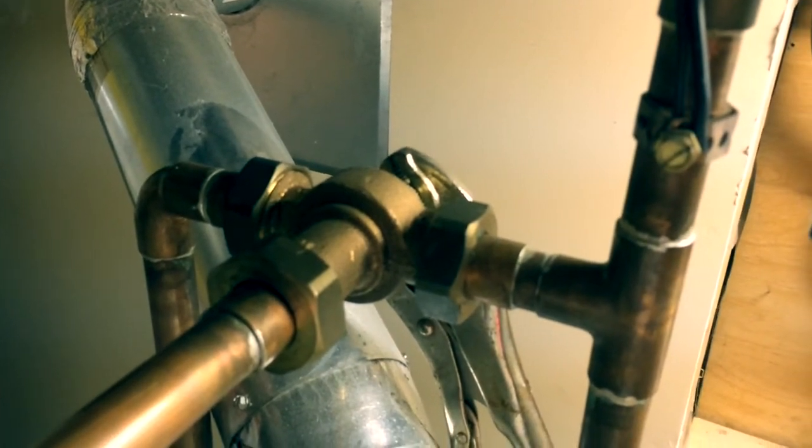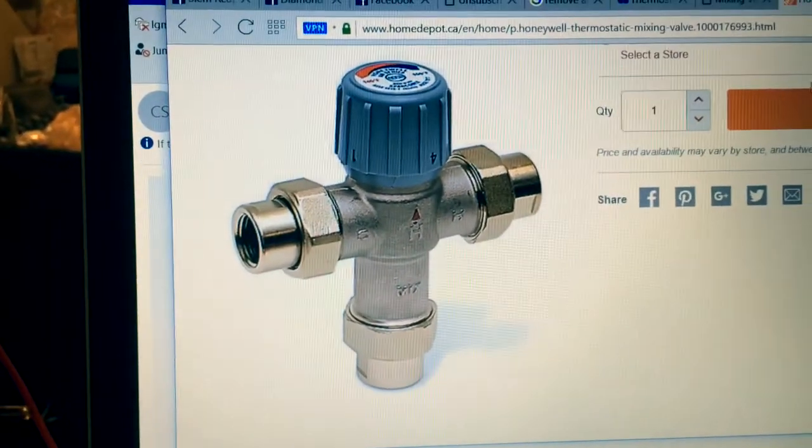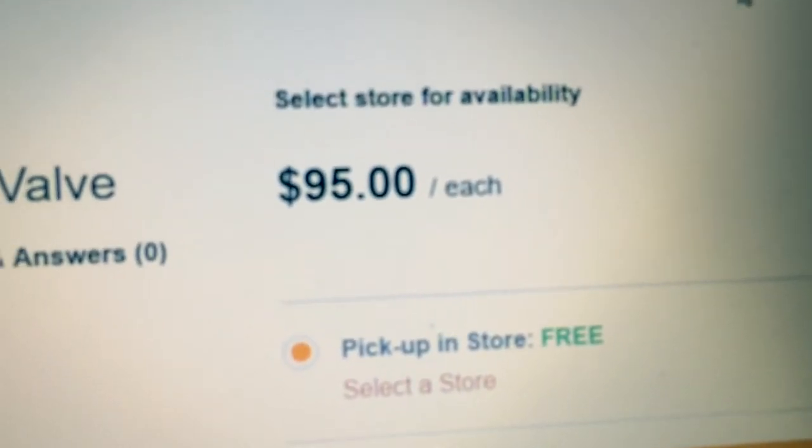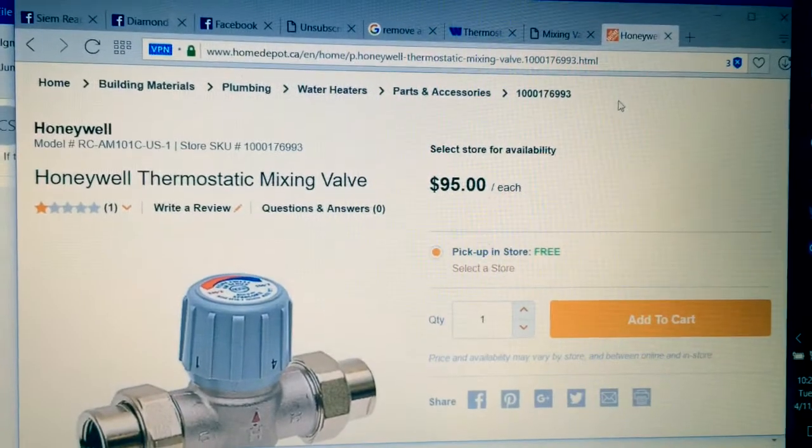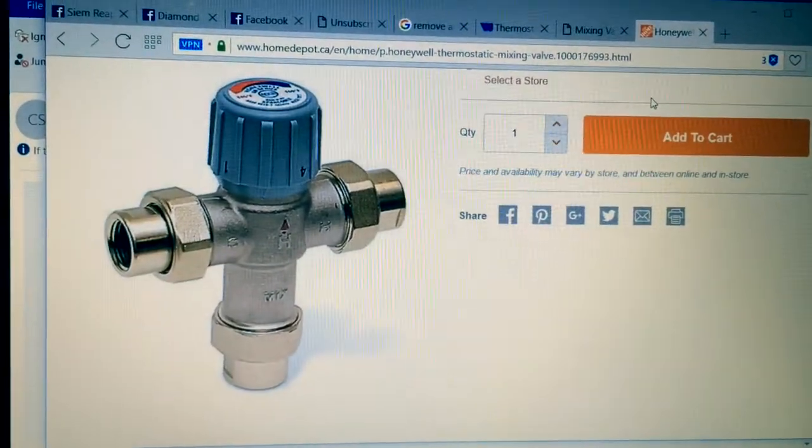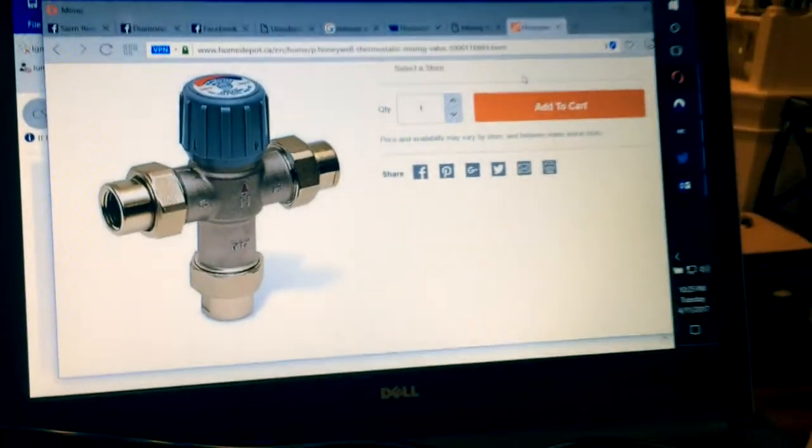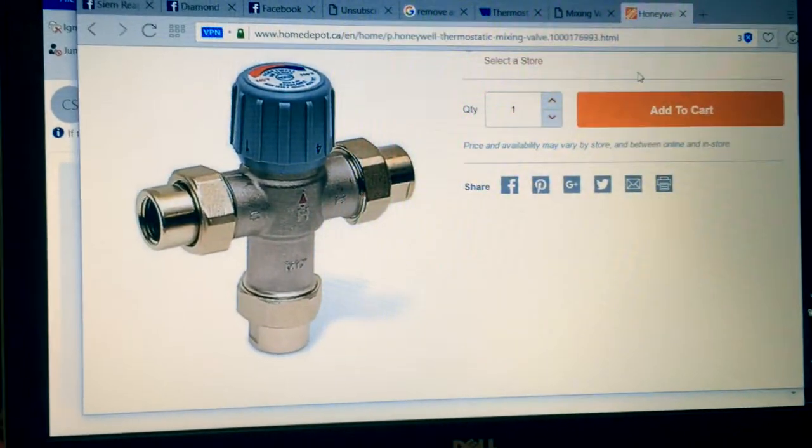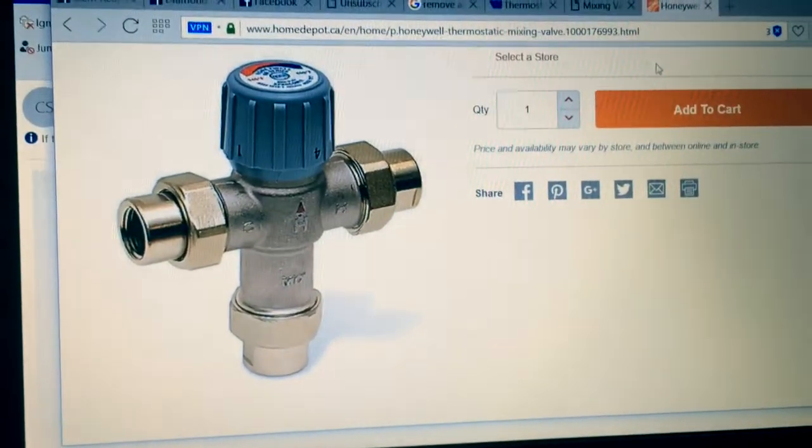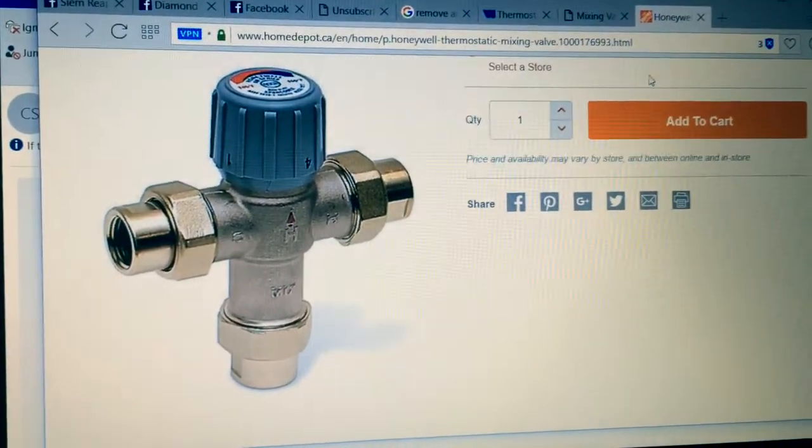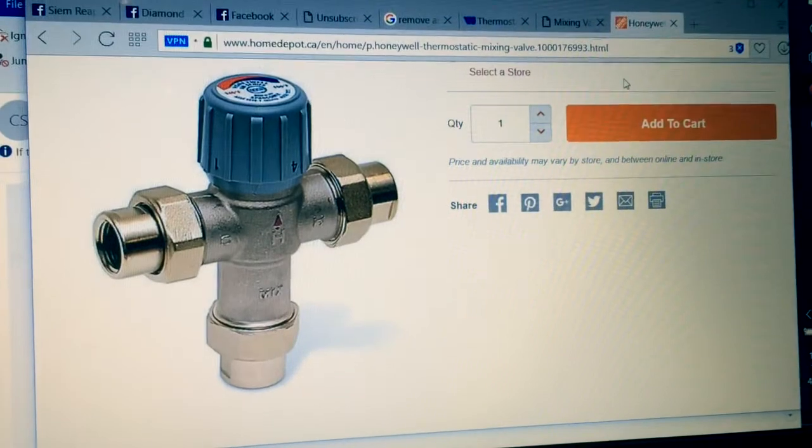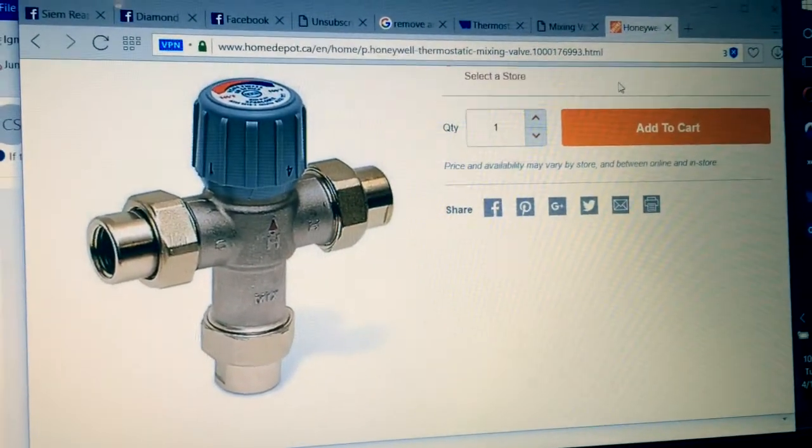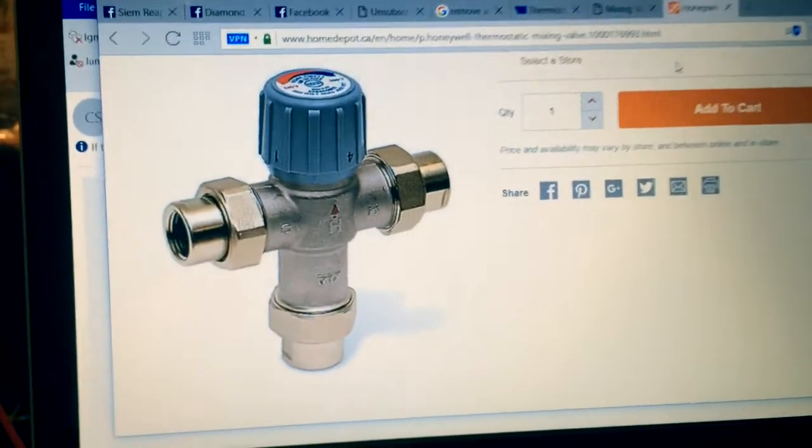And it's an unnecessary expense that we do not need. So here is the mixing valve here, this is a Honeywell thermostatic mixing valve: 95 dollars plus HST of 13 percent. Now, if you can't do this job yourself, you're going to have a 300 dollar bill from a plumber by the time you're done. It's common that these things go bad in three to five years. This is a whole new industry that the government has created. You do not have to have this thing on your hot water tank.